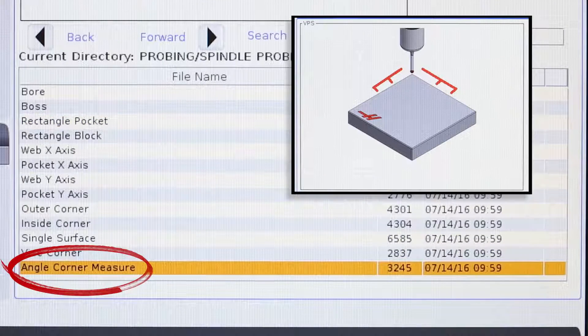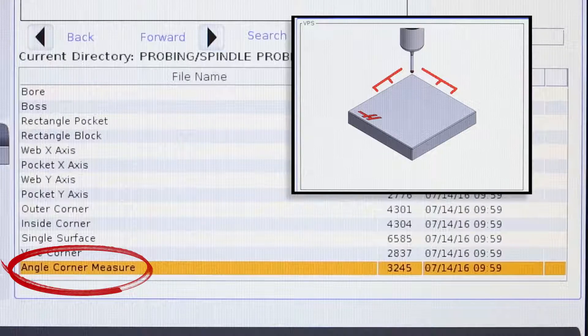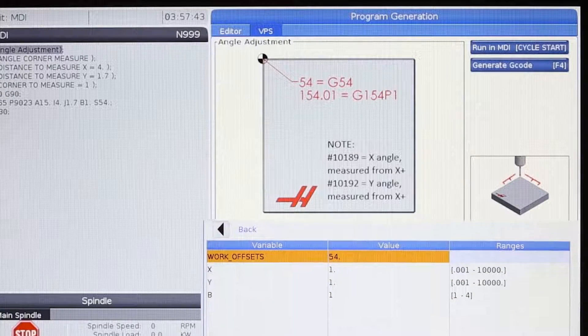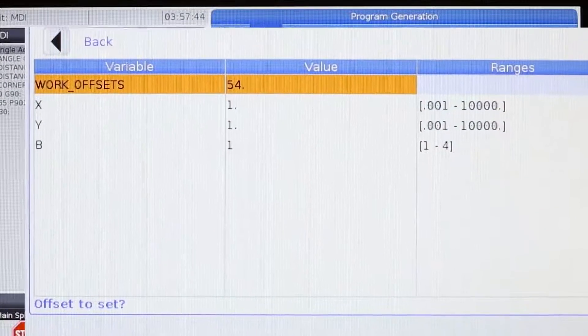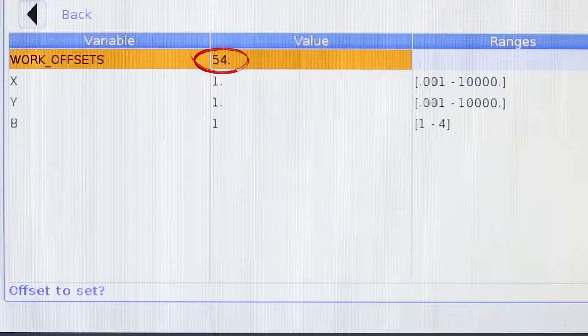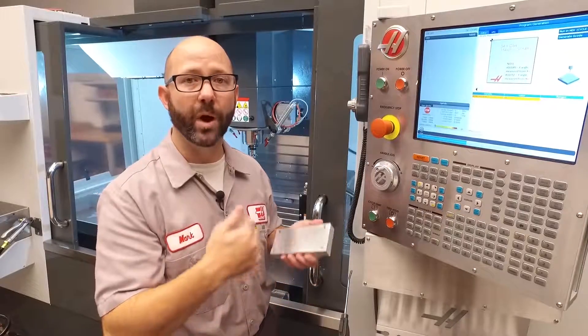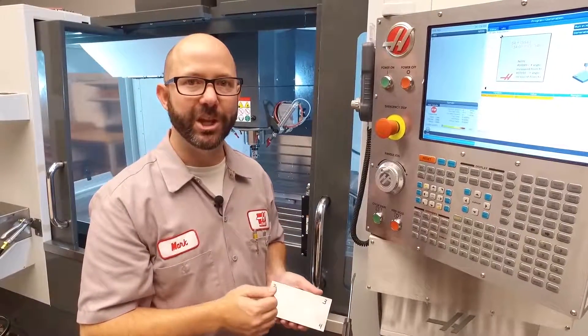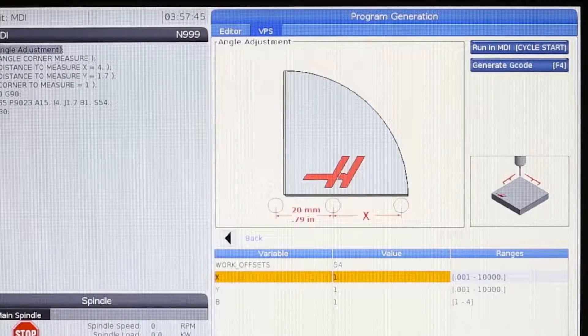Here's a cycle that we're gonna run: angle, corner, measure. All we've gotta do now is fill in the blanks. First thing it's asking us for is our work offset. It defaulted to 54, and we're actually gonna leave it right there because we're gonna write to work offset G54.